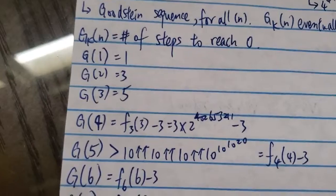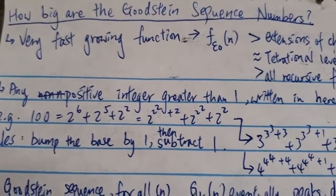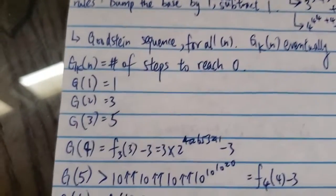So imagine the number of steps. It's going to be very big. That's why this sequence grows very fast. As fast as f of epsilon naught n.